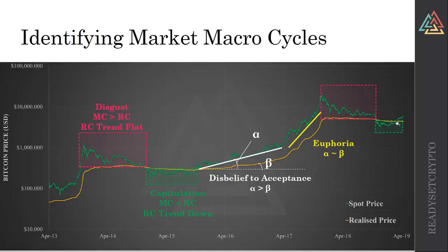Interestingly, during that April 2nd spike in Bitcoin price, we actually punched right up through the realized cap, which — as far as history tells — effectively ended the capitulation phase and in theory bumped us up into the next bull cycle. That's one of the huge metrics that really got people excited.